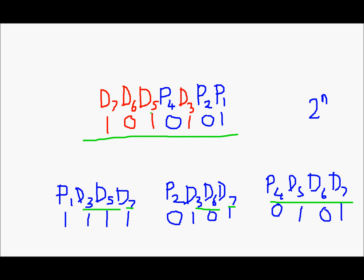Now let's say your friend is a digital transmitter and you are a digital receiver. Your friend is sending these bits to you. But some guy in between messes up this code and changes a bit to 0. So now you have two options — the first is to punch the guy... okay, nevermind — and the second option is to correct the code. We'll stick to the second option for now.